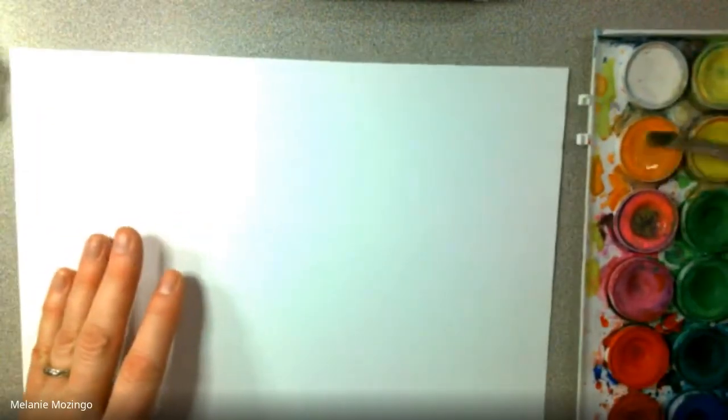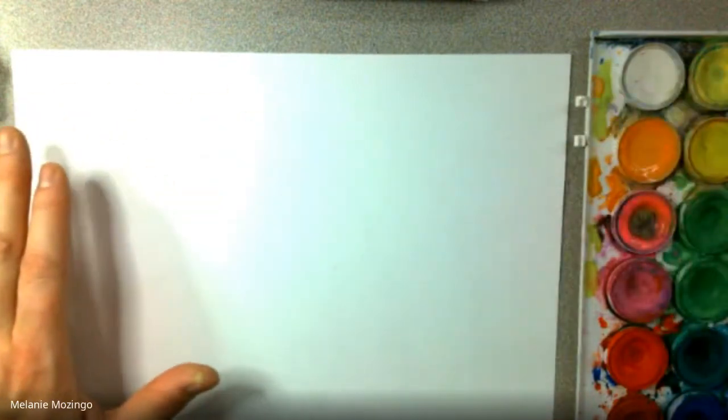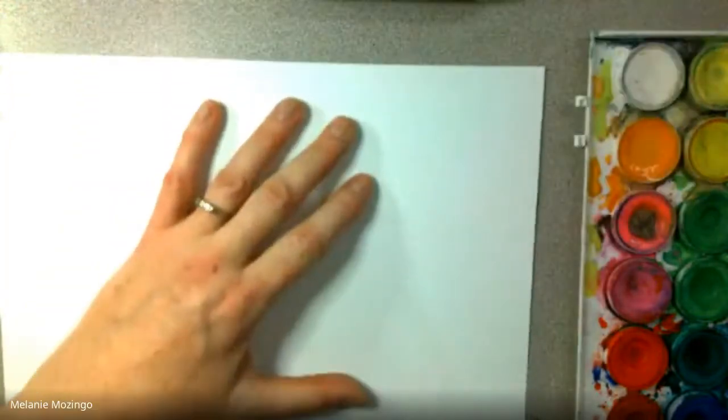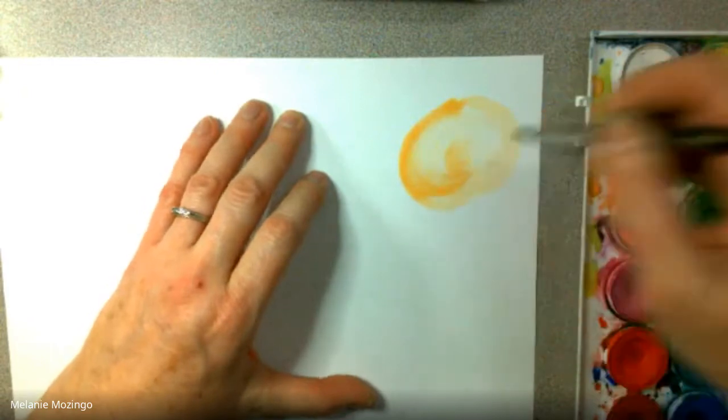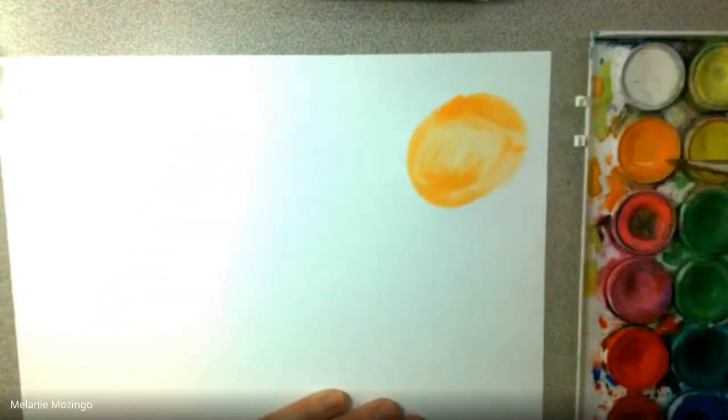So I'll just wash that out. I'm going to go ahead and start to, I'm going to do some orange. I'm in an orange kind of a mood. You can have your paper in the orientation of landscape view or the portrait view up and down. It's totally up to you. I'm going to have mine in the landscape view so you can see more of my paper.